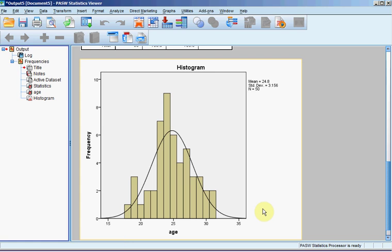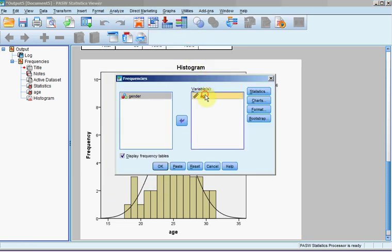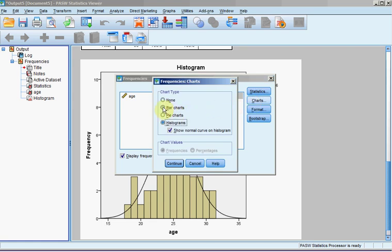Now let's process the other variable, the Categorical variable. We'll go back to Analyze, Descriptive Statistics, Frequency. Let's move age out of the variable box, and move gender in. For statistics, we're going to take out the central tendency variables, and we're going to take out the dispersion calculations, and we'll press Continue. For charts, we'll switch to a bar chart, and press Continue.